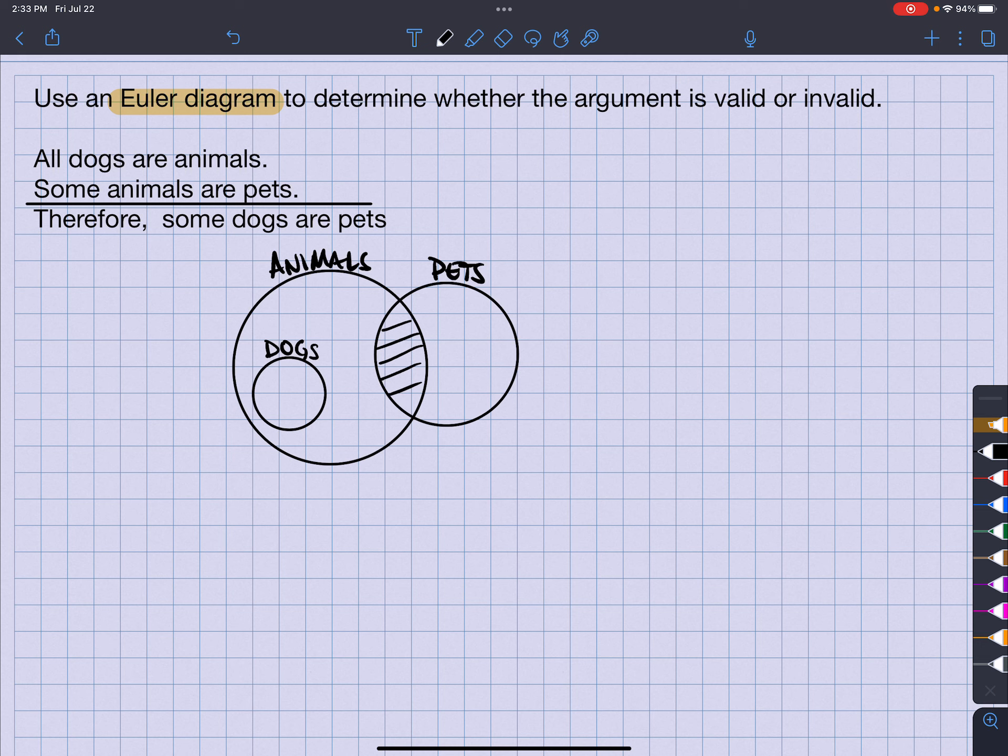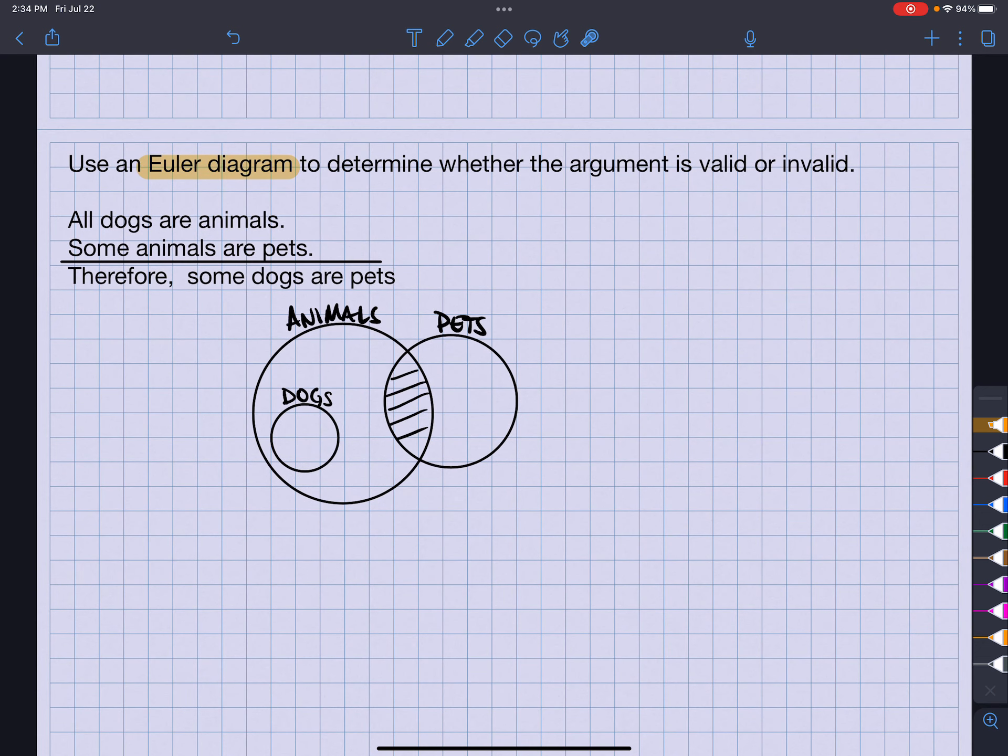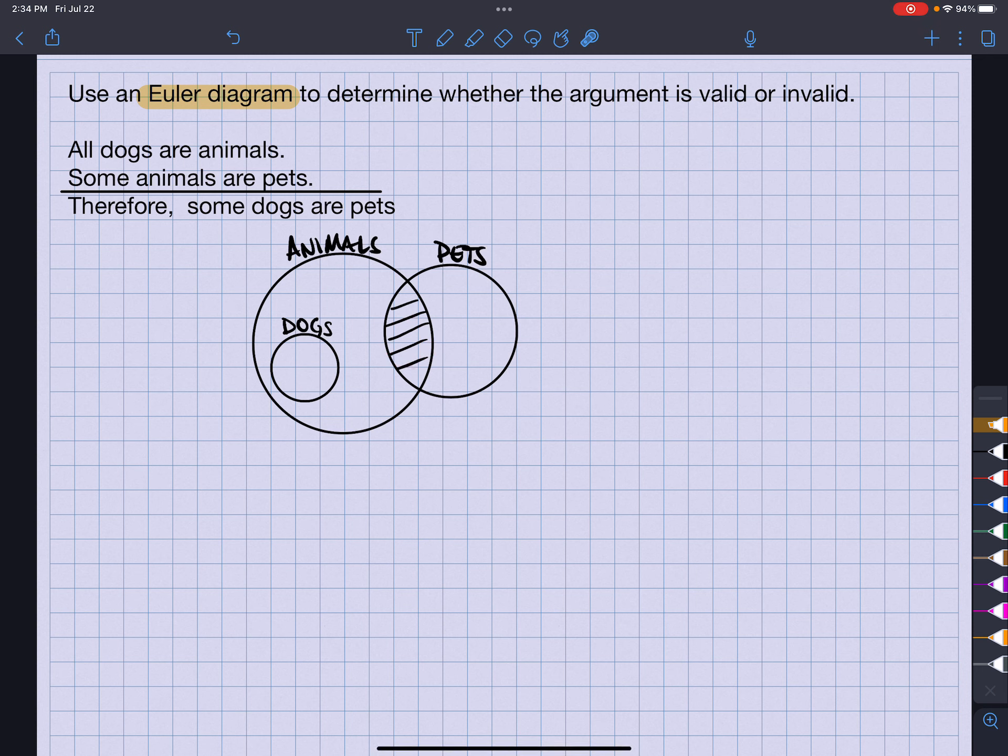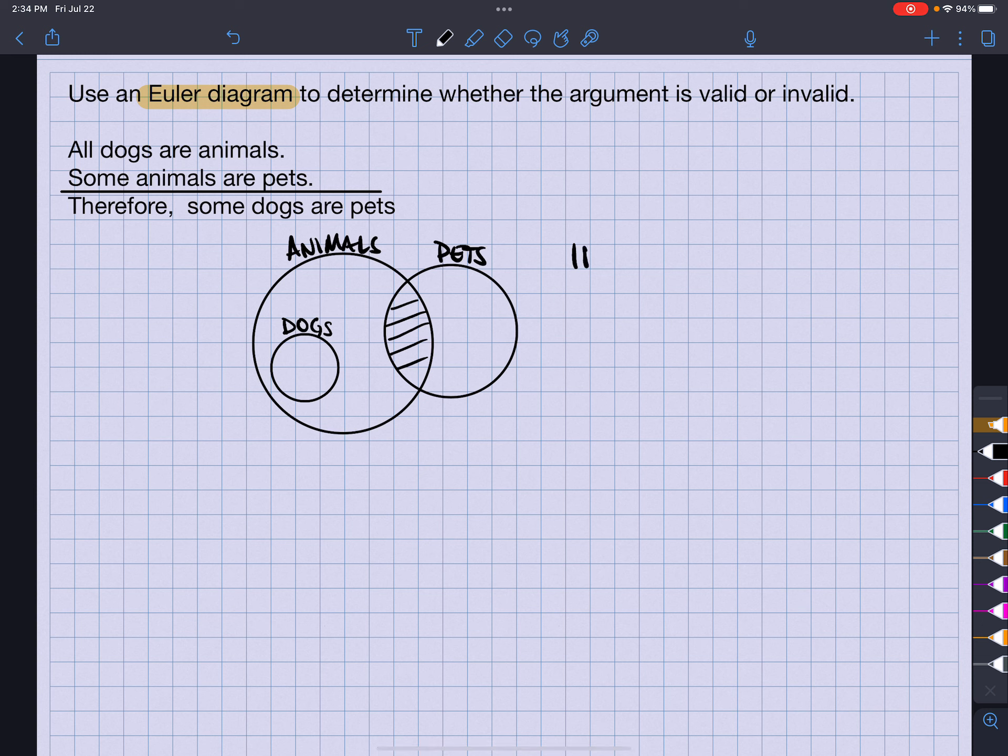Now, it says therefore some dogs are pets. Well, if you notice that there's no dogs that cross with the pets, so therefore this is invalid. And that would be choice B.